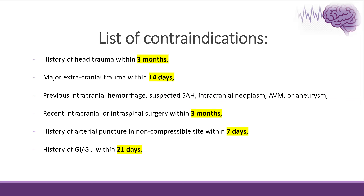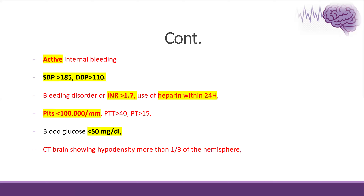TPA contraindications include any history of increasing risk of bleeding: history of head trauma, extracranial trauma, previous intracranial hemorrhage, suspected subarachnoid hemorrhage, neoplasm, AV malformation, intracranial or intraspinal surgery, history of arterial puncture in a non-compressible site, and history of GI or genitourinary bleeding. Also important: any active internal bleed, abnormal INR, PT, PTT, or platelets increasing the risk of bleeding, and if CT shows hypodensity in more than one-third of the hemisphere, meaning the infarction is already established.